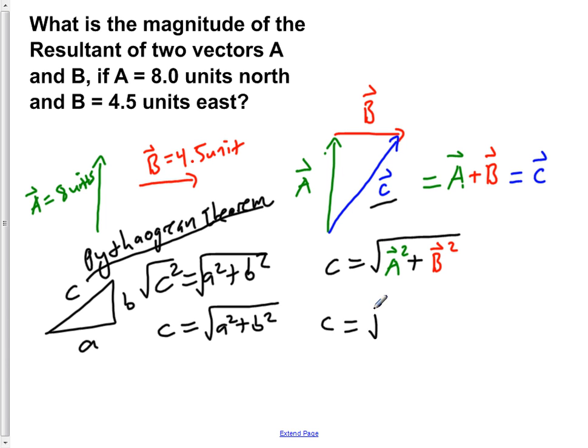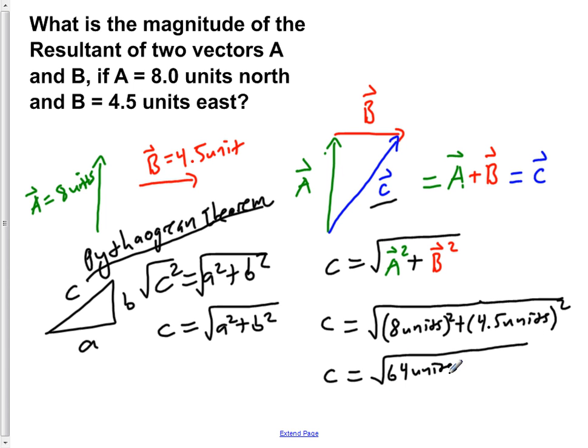If we plug in the values, we're going to have the square root of 8 units squared plus 4.5 units squared, which would give you the square root of 64 units squared plus 20.25 units squared. We add that together, we're going to get 84.25 units squared. If we take the square root of that, we would find that our resultant vector is roughly 9.2 units.